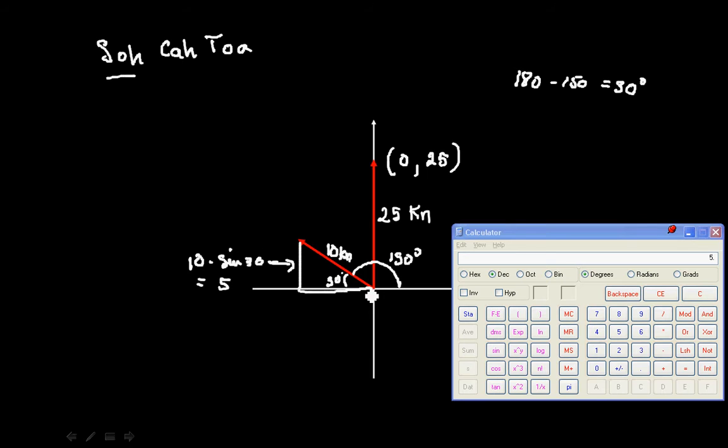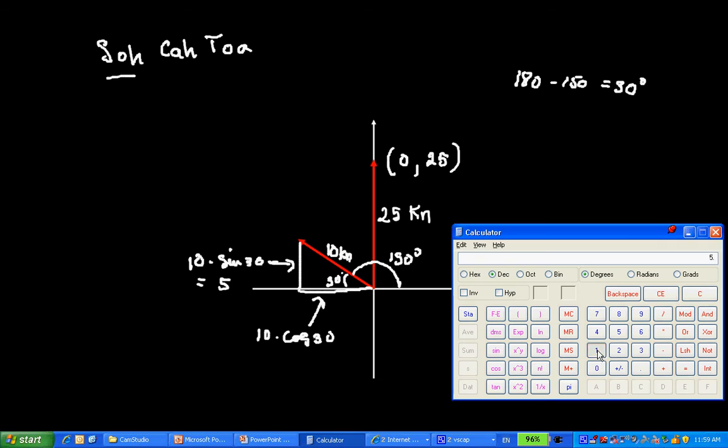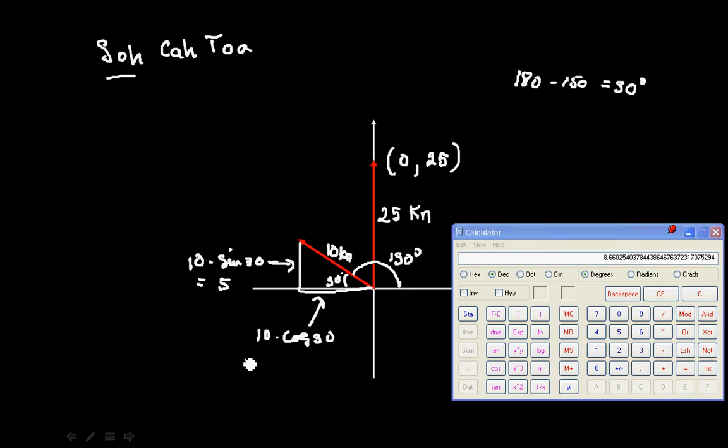Now to find the horizontal components, I use cosine. So 10 times cosine of 30 gives me this component over here, and with my calculator I get 10 times cosine of 30 equals, and so I see that this is negative 8.66.